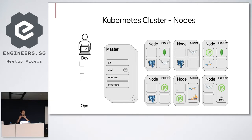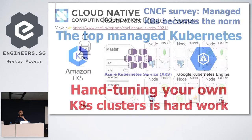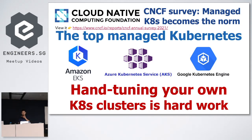How to set up the cluster is the big challenge. Many people have set up a Kubernetes cluster the hard way — installing Linux, all the packages, creating control plane nodes, adding worker nodes. It takes ages. According to the CNCF survey, people really dislike self-managed clusters and want an easy way to deploy. That's where managed Kubernetes has become so popular. Amazon EKS is definitely the clear leader, followed by other cloud providers. The main reason is that hand-tuning your own cluster is so hard.